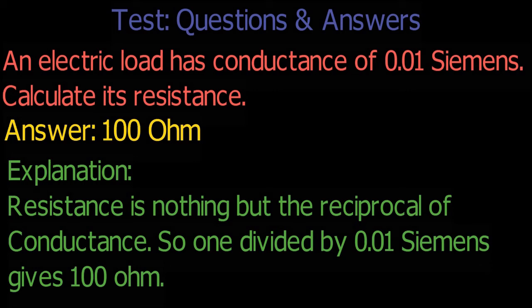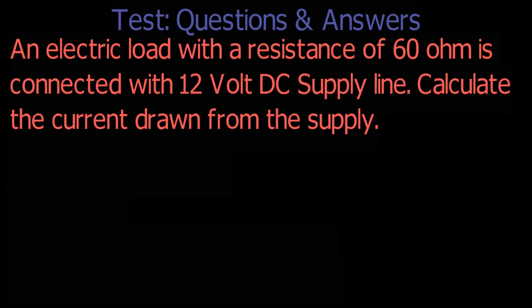Question number 2. An electric load with a resistance of 60 ohm is connected with 12 volt DC supply line. Calculate the current drawn from the supply.